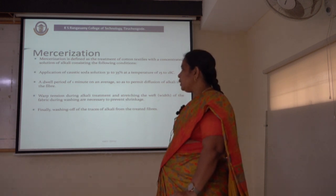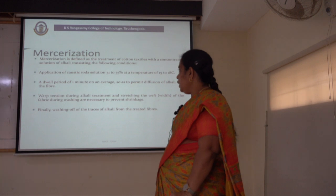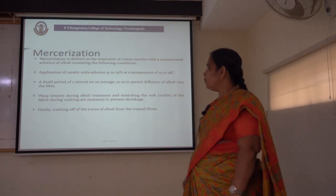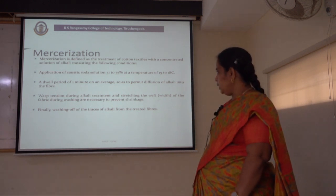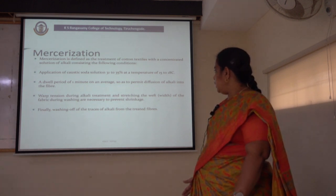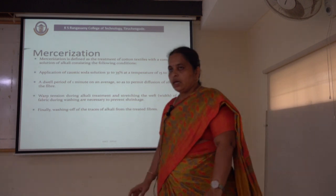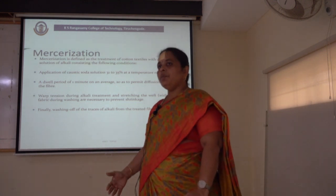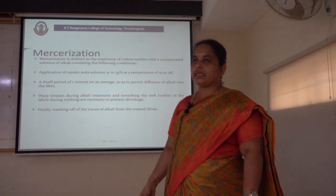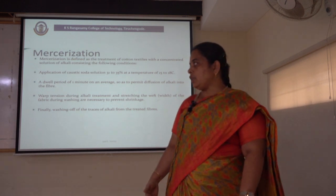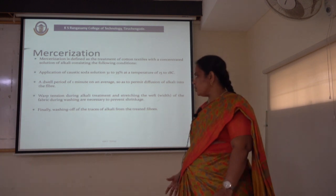That is, once the alkali is absorbed by the cotton, it has to be diffused. So a dwell period of about 1 minute has to be given. Next, the warp tension during alkali treatment and the stretching widthwise of the fabric during washing are necessary to prevent shrinkage of the textile material after the mercerization process. Once the tension is there along the lengthwise direction, shrinkage of the fabric occurs.